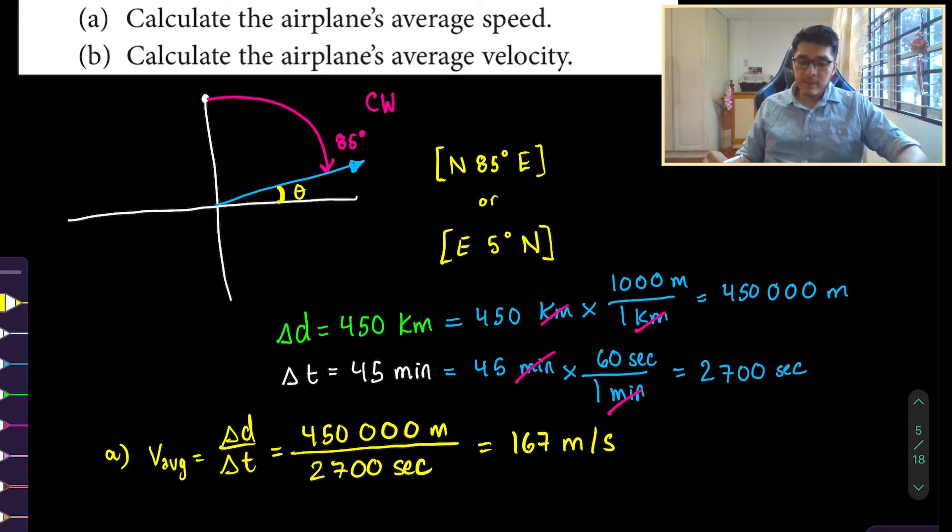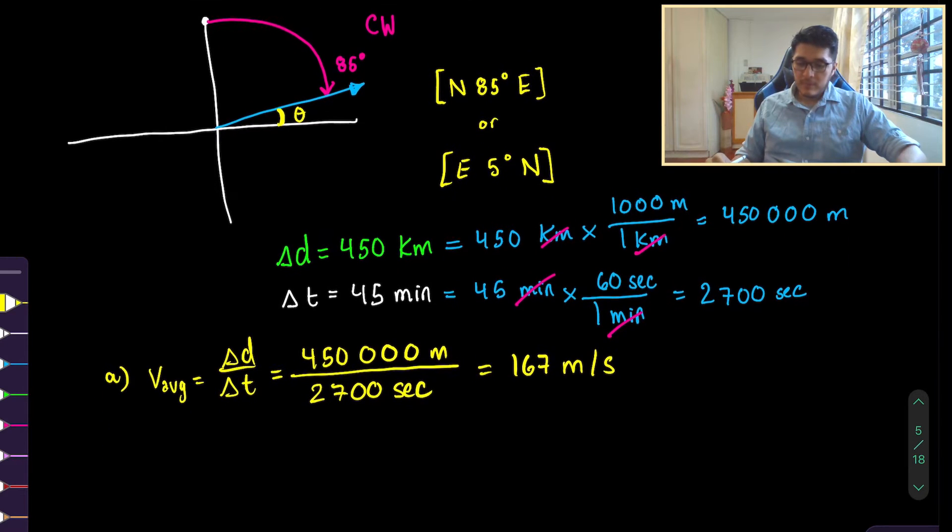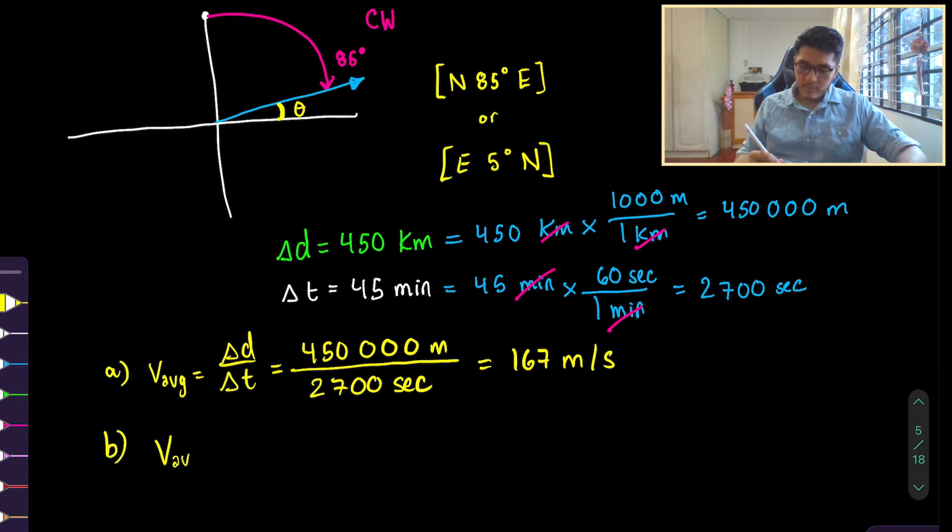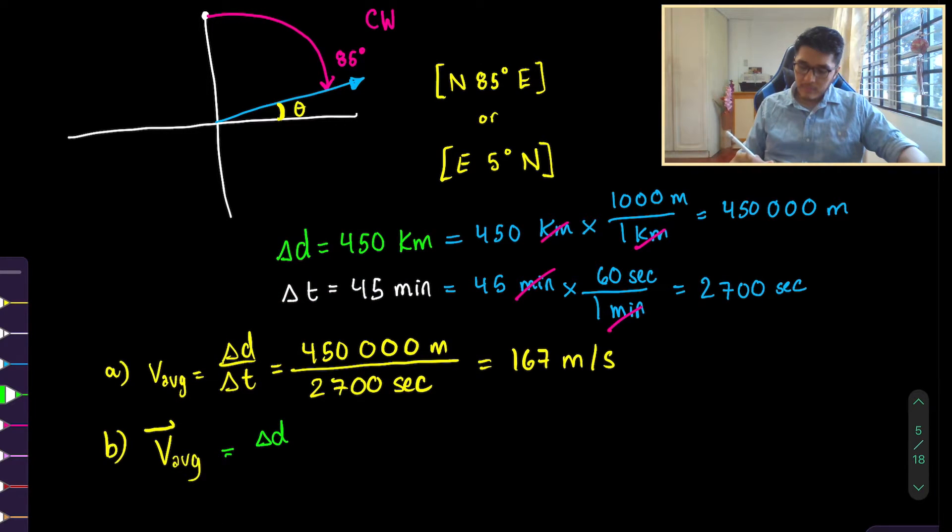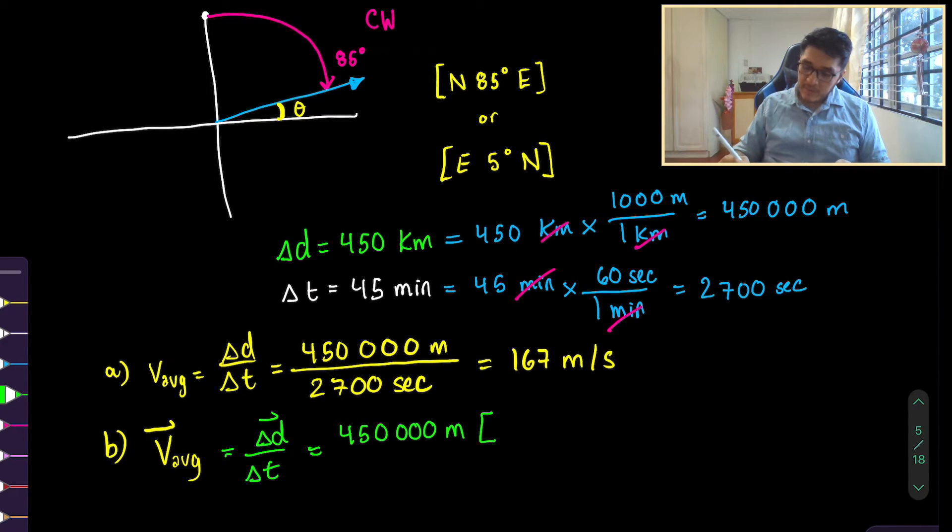Now part B asks us to calculate the average velocity. And that's the vector quantity. So we need to find the magnitude and direction. Now normally, the formula is the displacement over the change in time. But in this case, because our airplane is not changing any directions, the distance that is traveling is the same as the length of the displacement vector.